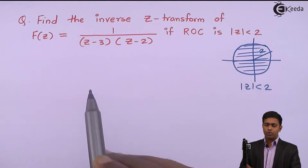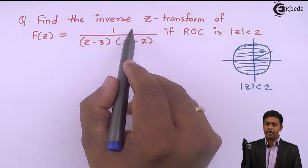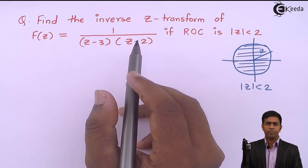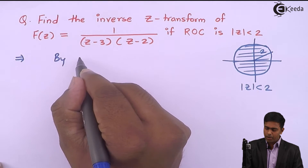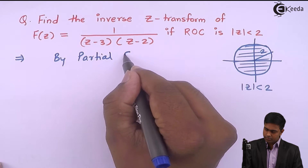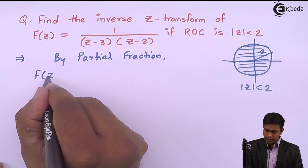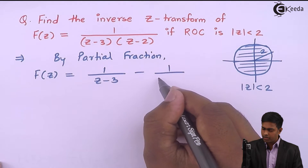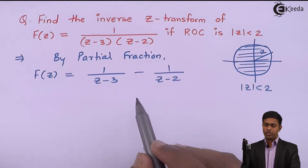To find the inverse z-transform and recover the original sequence, we will separate the given function using partial fractions. By partial fractions we get F(z) = 1/(z-3) − 1/(z-2).